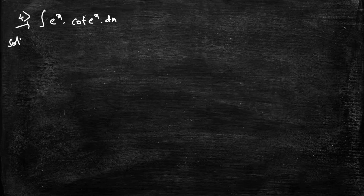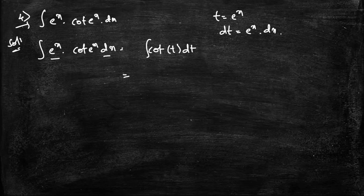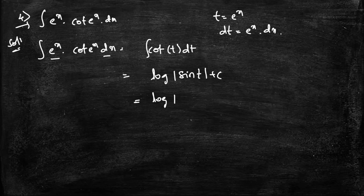Fourth question: integral of e^x · cot(e^x) dx. Let t = e^x, so dt = e^x dx. The integral becomes ∫cot(t)dt = log|sin t| + c. Substituting back, the answer is log|sin(e^x)| + c.